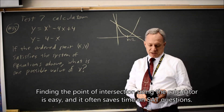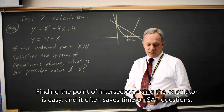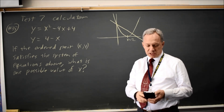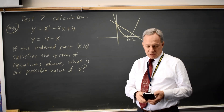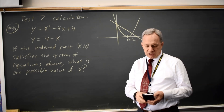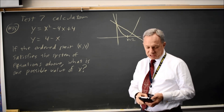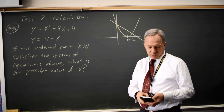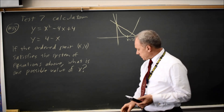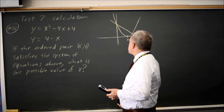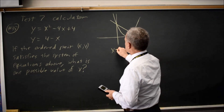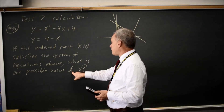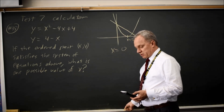Find the point of intersection. Calculate, intersect — just hit enter three times. You don't need to use your cursor to move near the point of intersection. I get x equals 0. The question asks for one possible value of x, and I just found it.